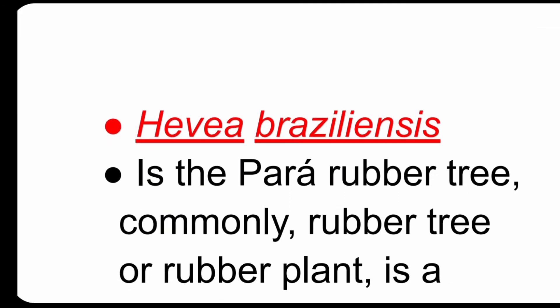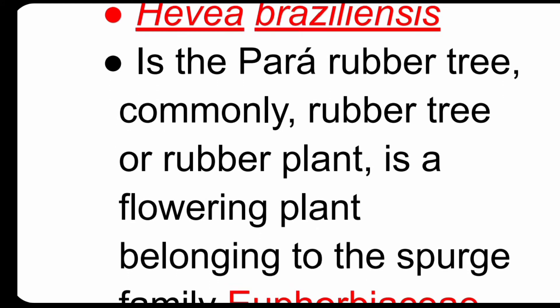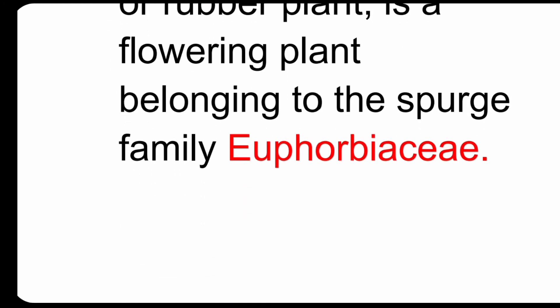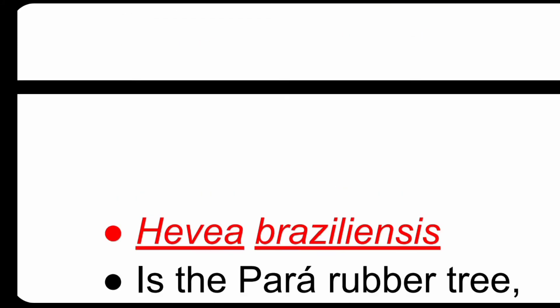Number four is rubber. Hevea brasiliensis is the Para-rubber tree, commonly known as the rubber tree or rubber plant, and is a flowering plant belonging to the Spurge family Euphorbiaceae. This is the Para-rubber — this is the scientific name and the family Euphorbiaceae.